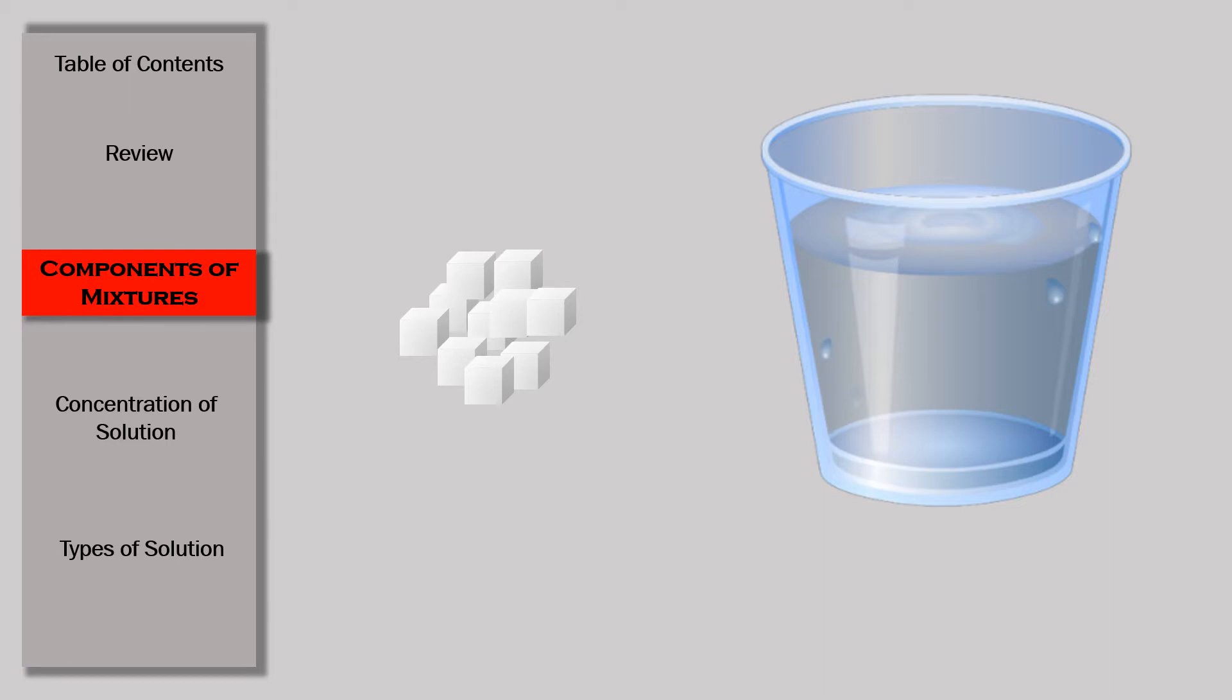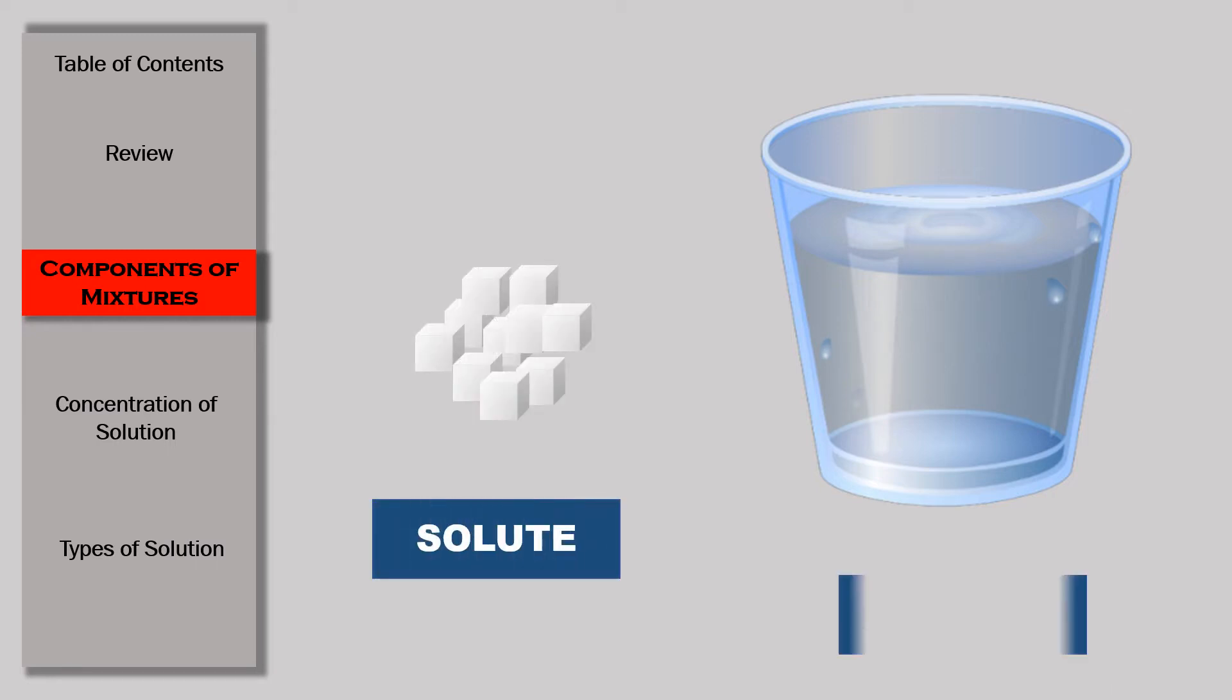We have here solid and liquid samples. White powder is the solid sample and water as the liquid. White powder is put into the water and eventually dissolves after some time. With that, white powder is the solute and water is the solvent.